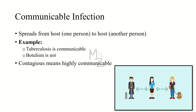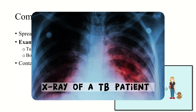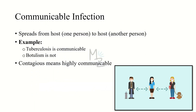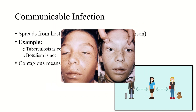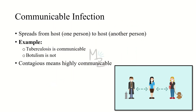Many but not all infections are communicable. For example, tuberculosis is a communicable infection because it spreads from one person to another via airborne droplets produced by coughing. But botulism is not communicable because the exotoxin produced in contaminated food affects only those eating that food. If a disease is highly communicable, there's a specific term for it: contagious.